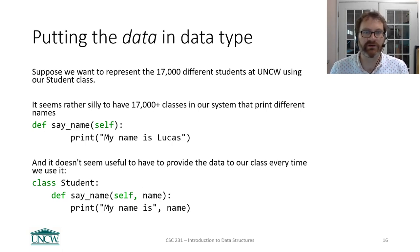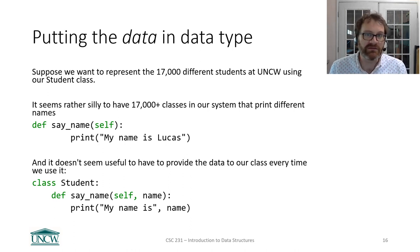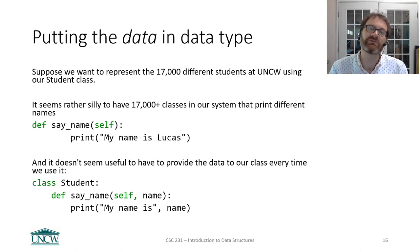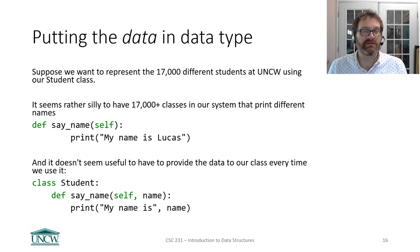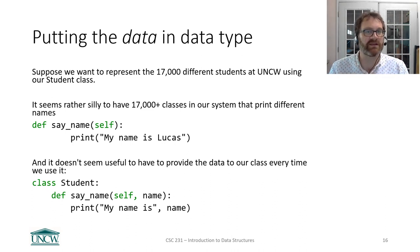Strings in Python are collections of individual characters. Lists are collections of elements. Even integers are collections of little tiny bits — ones and zeros — used to represent a whole number. But we can make data types hold whatever low-level fundamental data we want.